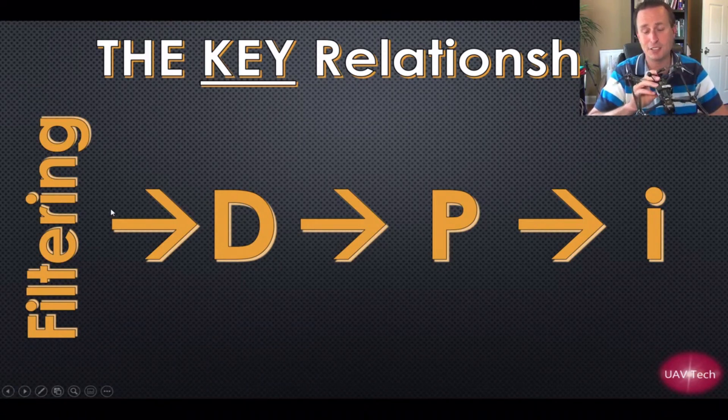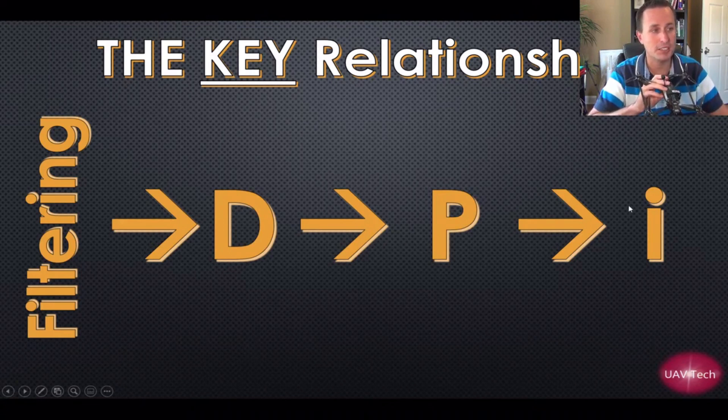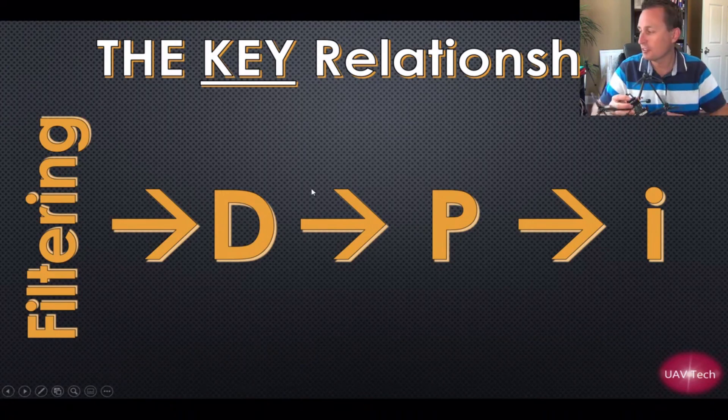These arrows are what matter, not the gains themselves. It's really the relationship between these terms. We refer to them as PID, but I think it would be simpler if it was DPI just for the concept of grasping this.